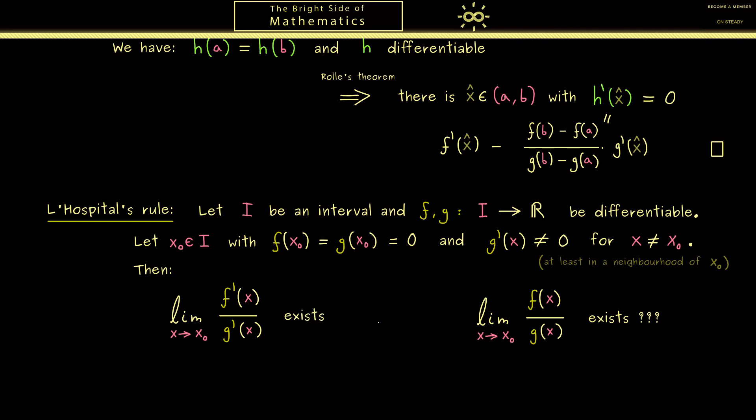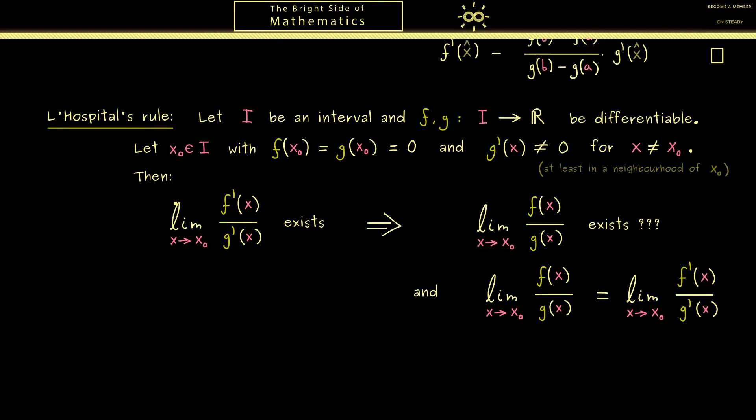Ok, by having all this we get our result. If this left limit exists, then also the right limit exists. And indeed, in this case we also get that both limits coincide. Which immediately gives us a nice calculation rule for the original limit f divided by g. We just have to know the derivatives. Ok, and this is what we call L'Hôpital's rule. And of course now we won't have any problems proving it.